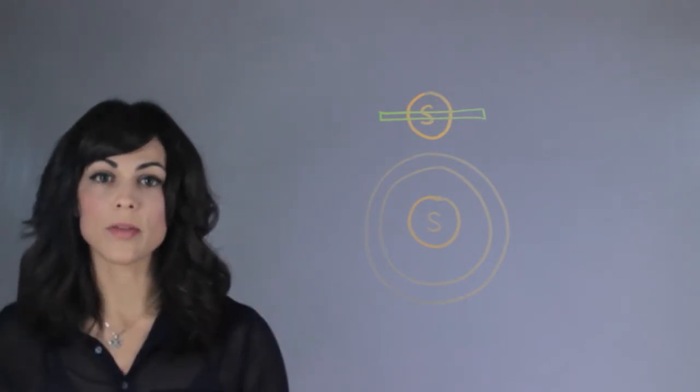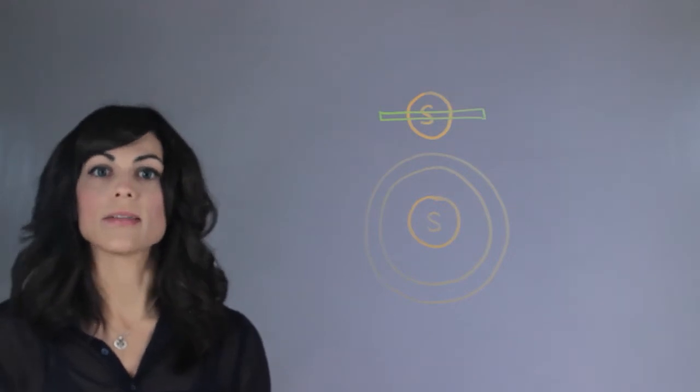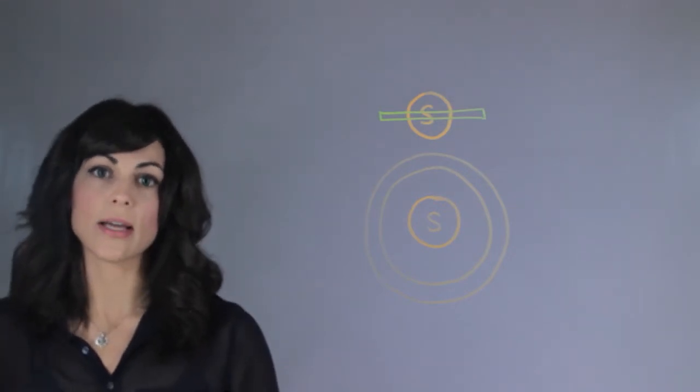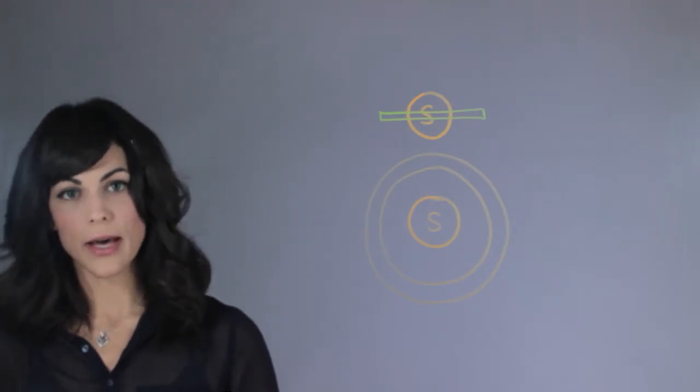So the rings of Saturn are the most majestic ring system in the entire solar system, despite the fact that the other gas giants actually have ring systems, but not nearly as big as the ones in Saturn.